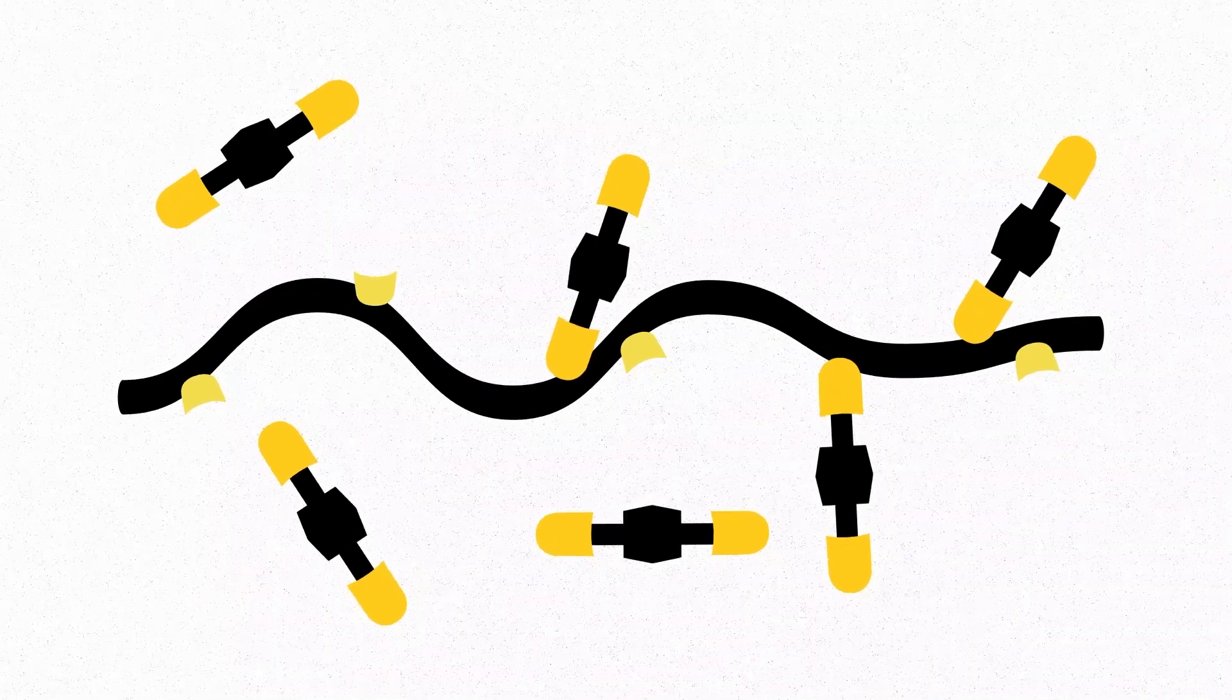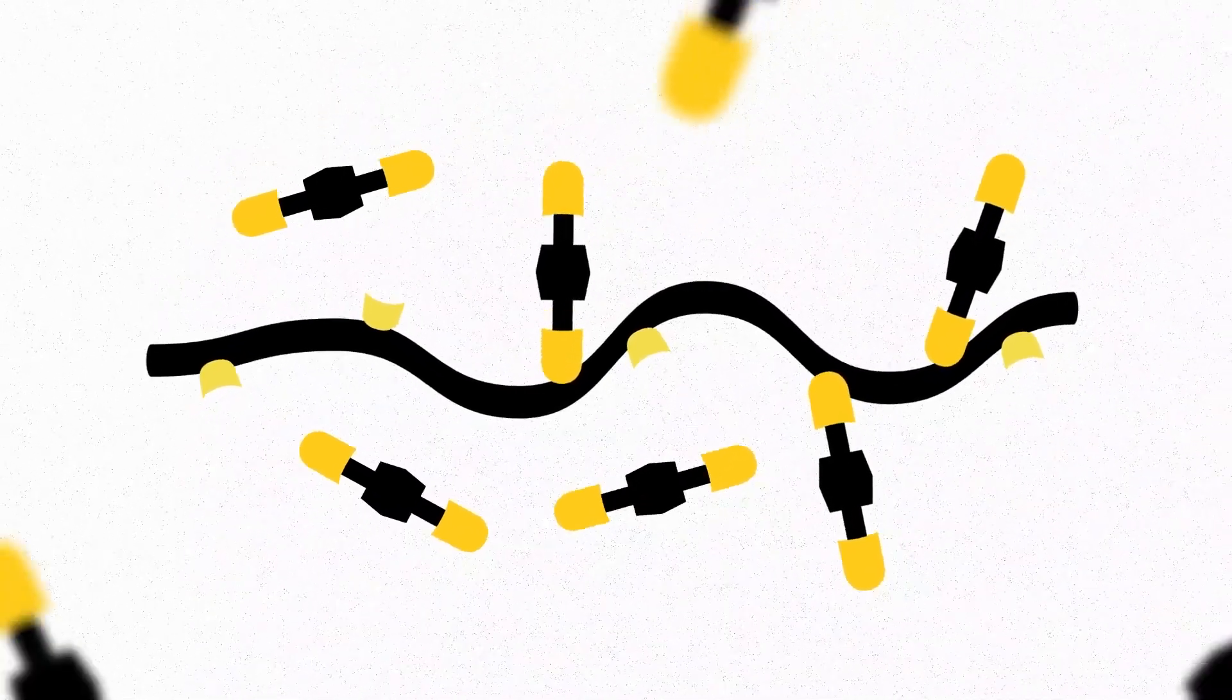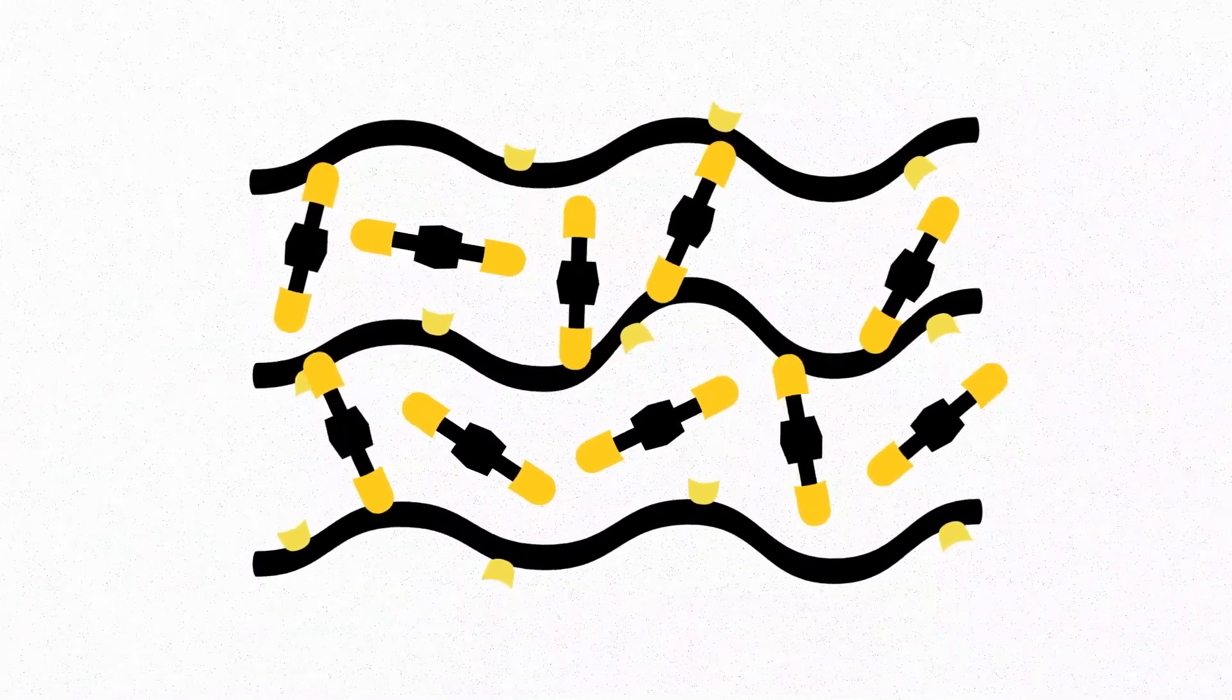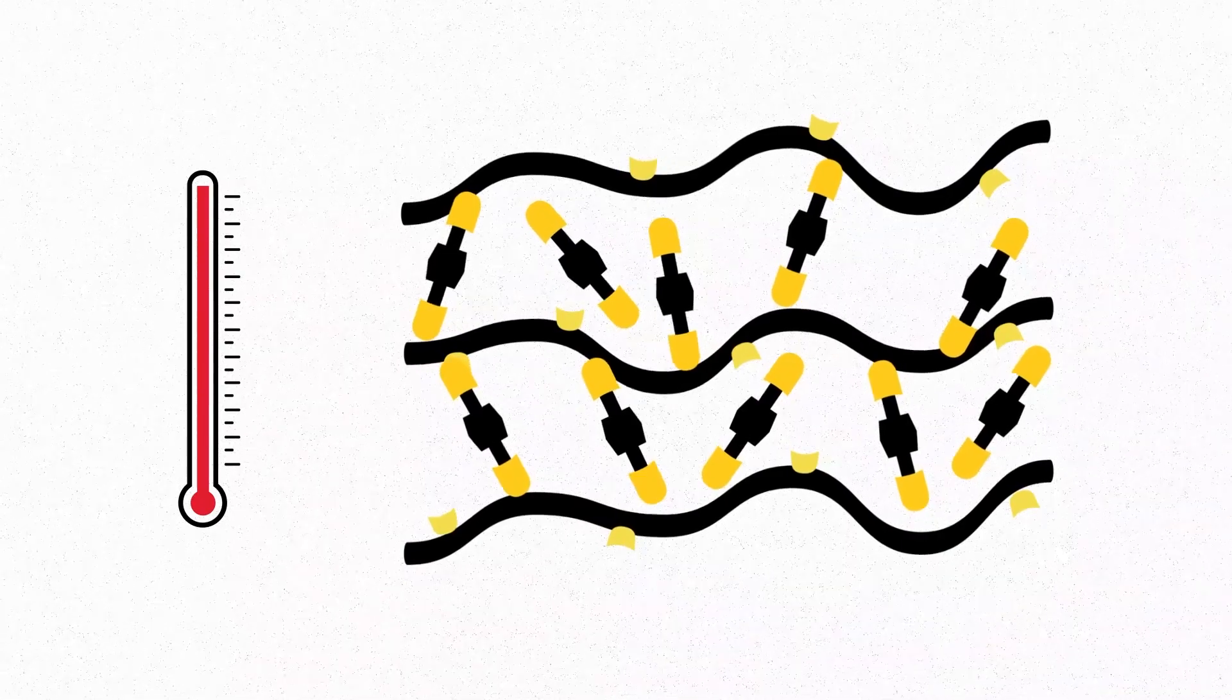The material is made from long chains of molecules called a polymer. Dangling, like charms on a bracelet, are cross-linking molecules that hang from these long polymer chains. At high temperatures, the cross-linking molecules remain disconnected, freeing the polymer chains from each other.